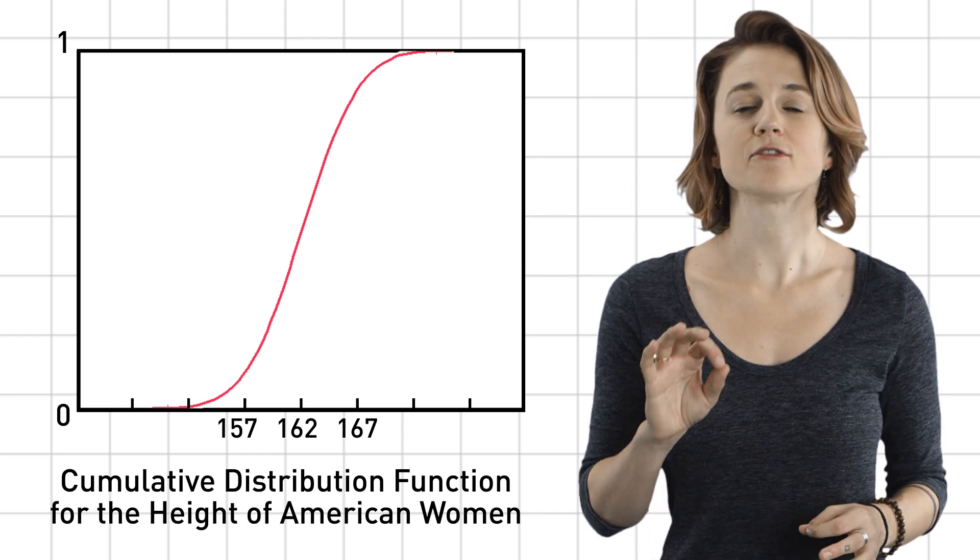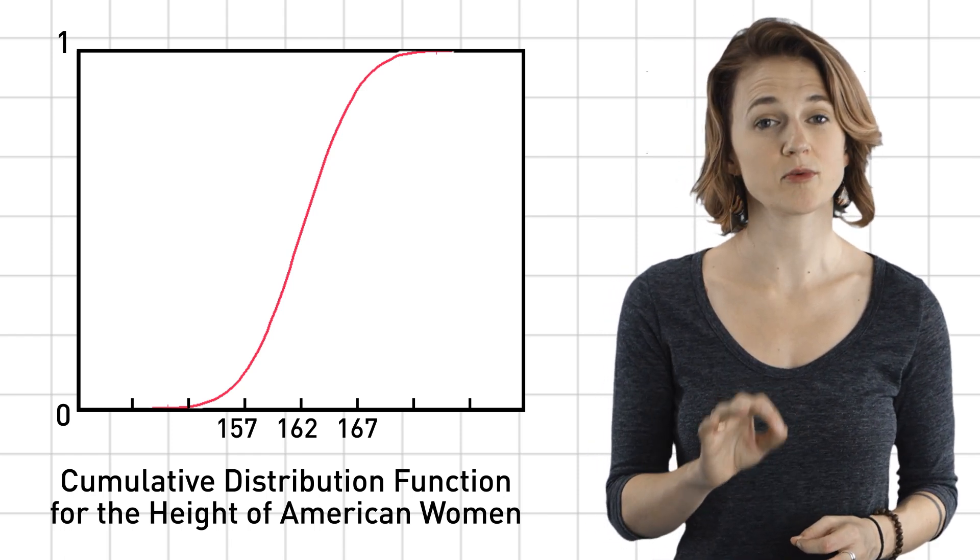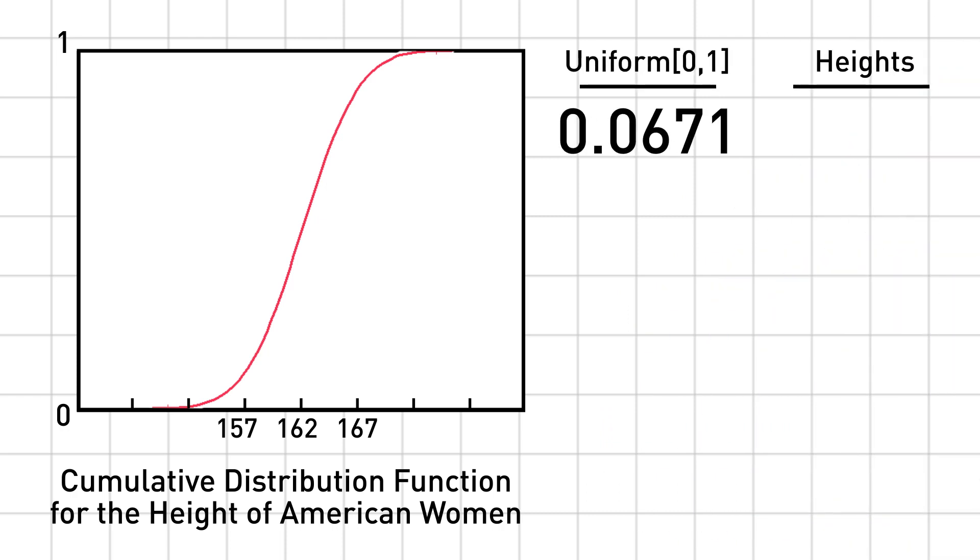The first number in our sequence is 0.0671. So we locate that point on the cumulative distribution for heights whose y value is 0.0671. In other words, we find the height such that 6.71% of American women are shorter than that. The next number in our sequence is 0.9. So we use the cumulative distribution to locate the height such that 90% of American women are shorter than that, and so on, creating a new sequence.